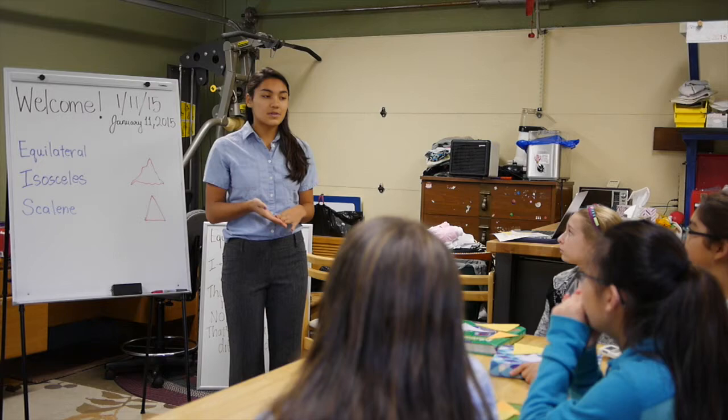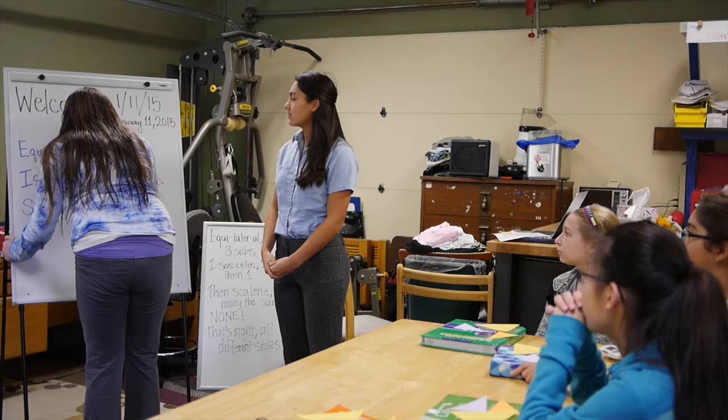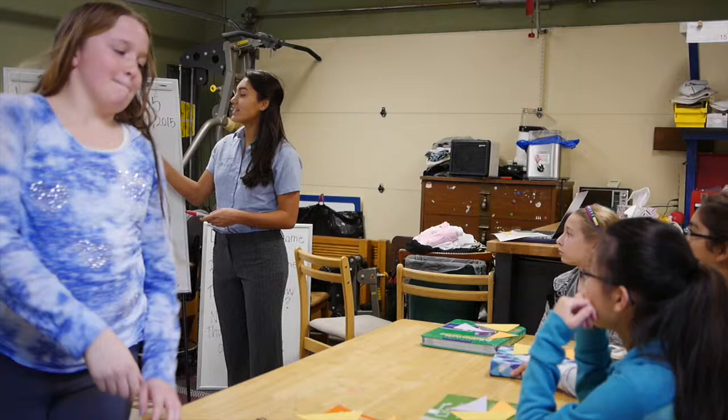And that is a good way to remember this triangle, that all three sides are equal. Can someone come up and draw an equilateral triangle for me? Mackenzie? Very good. So Mackenzie drew a nice triangle where all three sides are equal. That is an equilateral triangle.